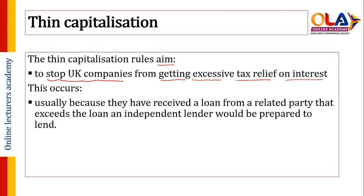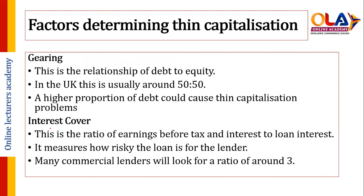This occurs when a company receives a loan from a related party that exceeds the loan an independent lender would be prepared to lend. Usually a bank or independent lender would be reluctant to provide an excessive level of borrowing, but if a related party is giving an excessive loan, the tax authority will check this.